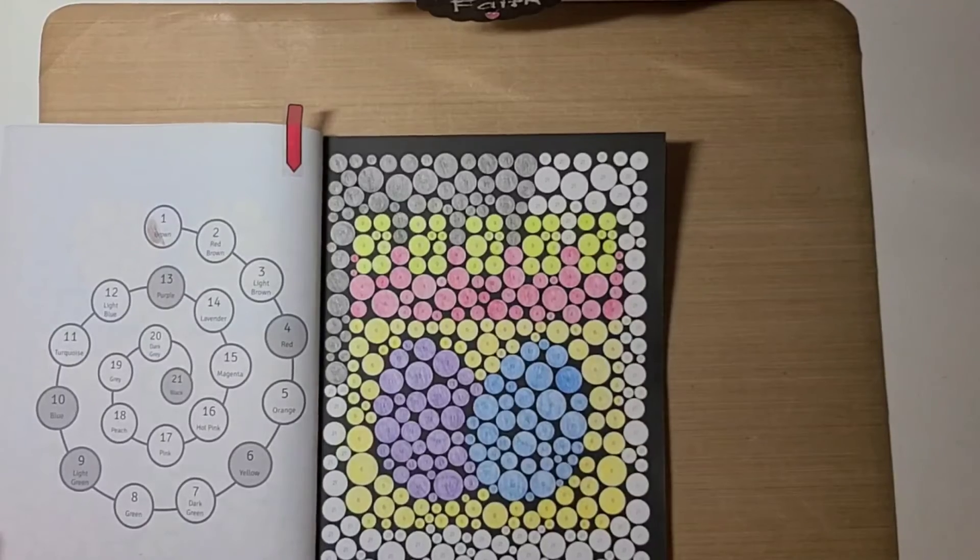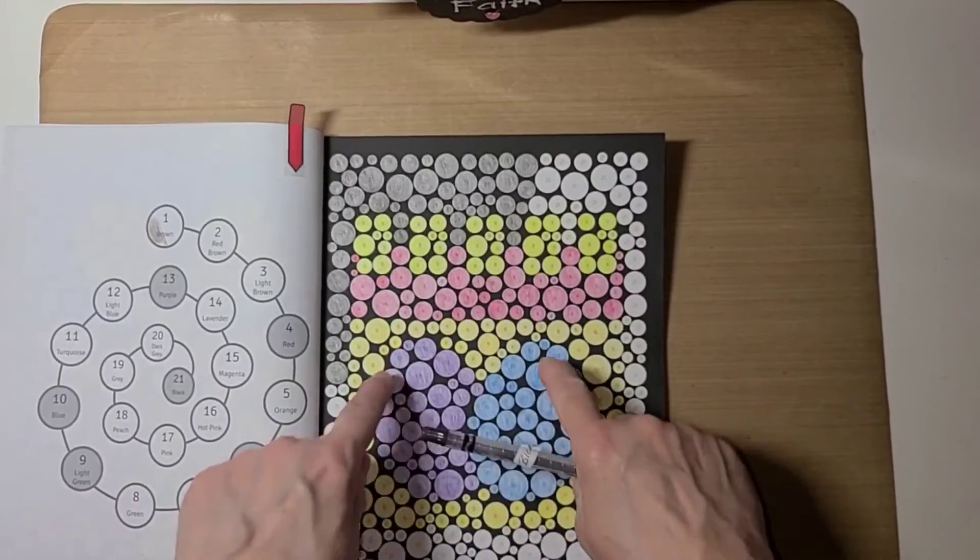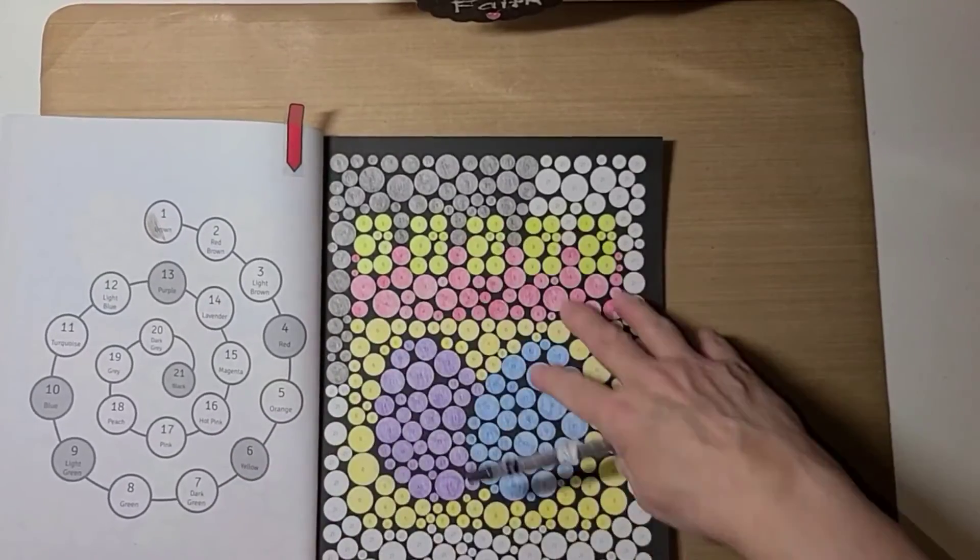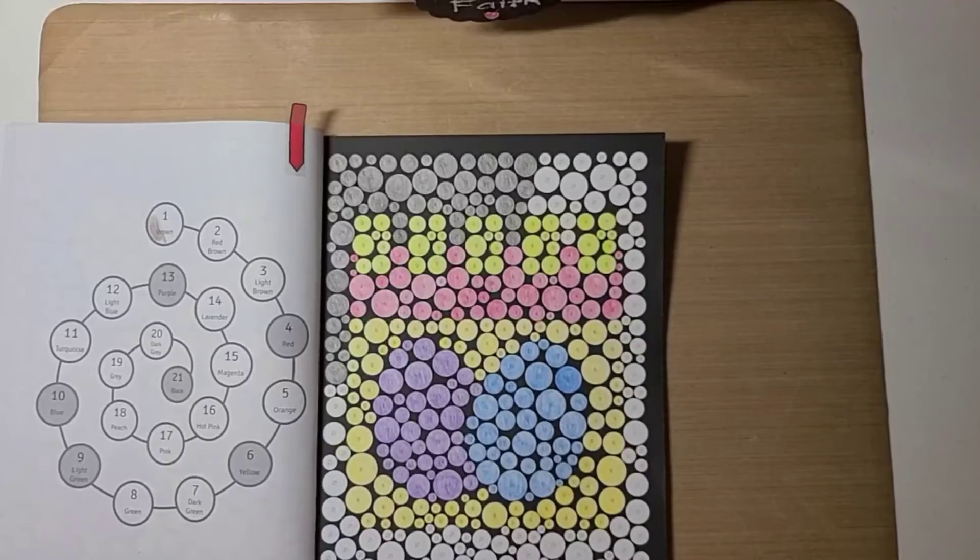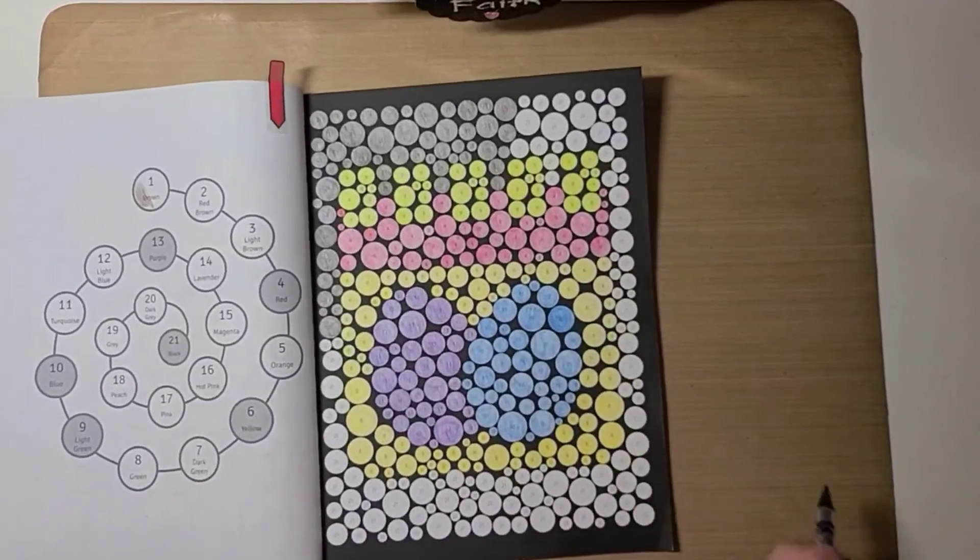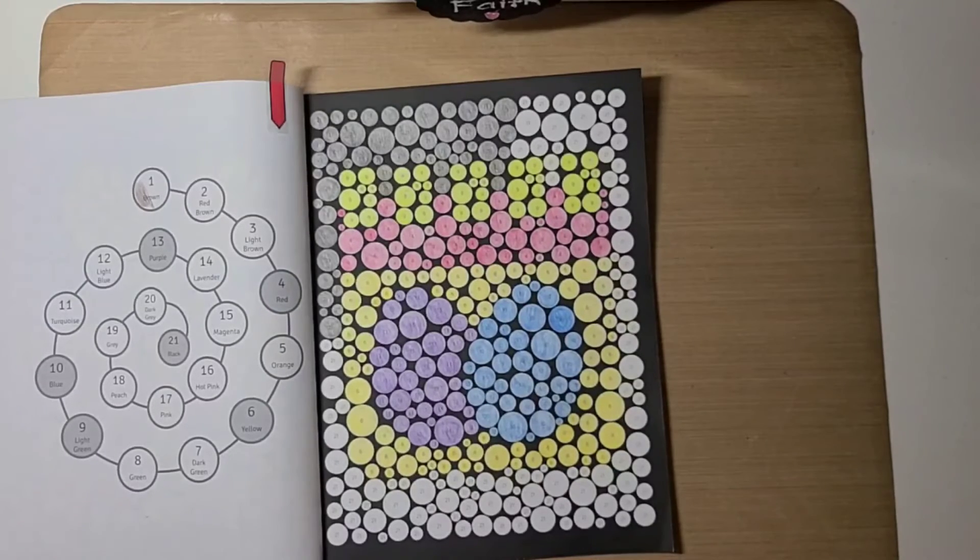Maybe y'all can help me figure out what this is supposed to be because I haven't, like I said I know this is Easter eggs but I can't figure out what they're in. Maybe on camera you can spot it better than I can looking up close. I will be back when I get this completed.